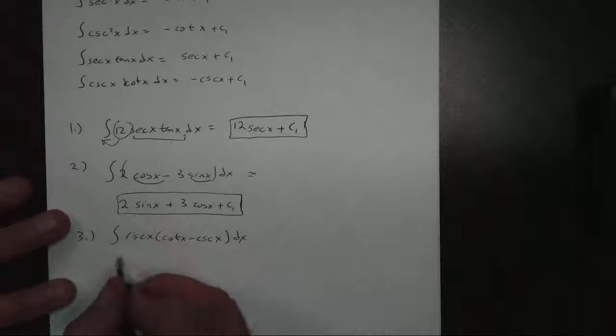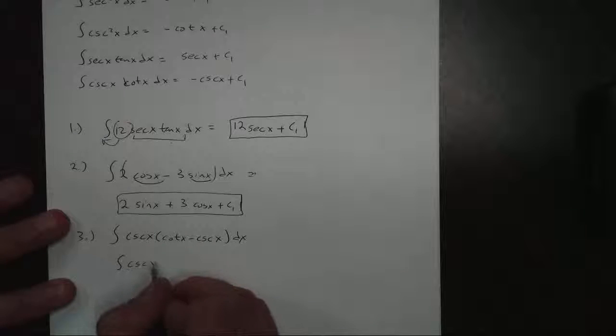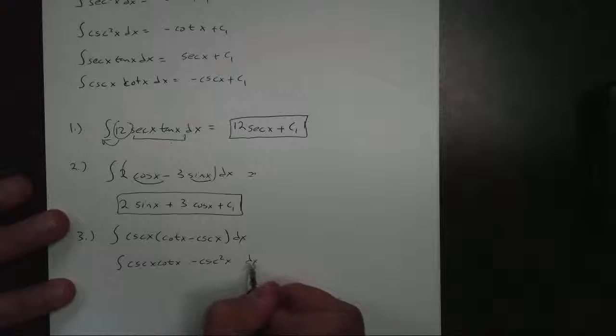And that gives me cosecant of x cotangent of x minus cosecant squared of x dx.